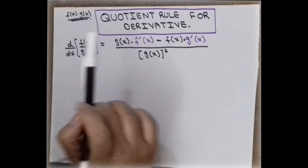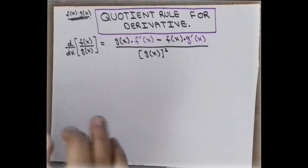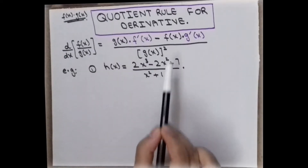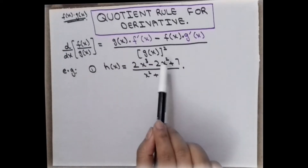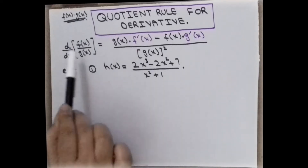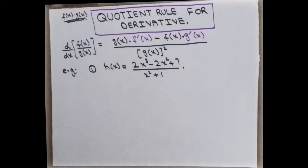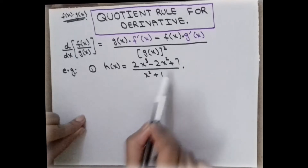This is the quotient rule formula. Let us take examples to understand how to apply this rule. We have a function in divided form — how to apply the derivative on this quotient form according to this formula.